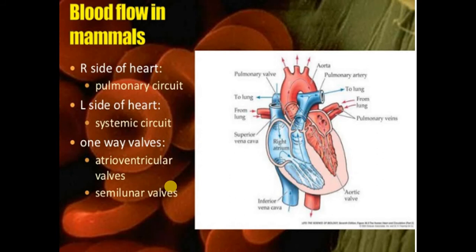If we talk about mammalian or human heart morphology, there are three layers present in the heart. One is epicardium, one is myocardium, and one is endocardium. The outer layer is epicardium, which is made with connective tissue, and it provides protection to the heart. The middle layer is myocardium and it is made with cardiac muscle tissue.